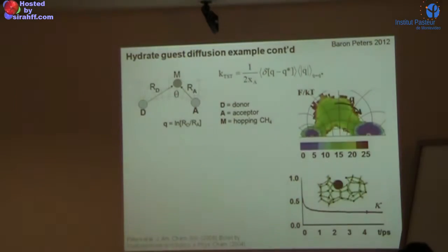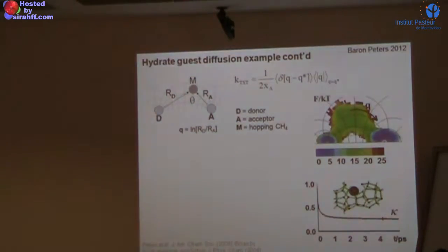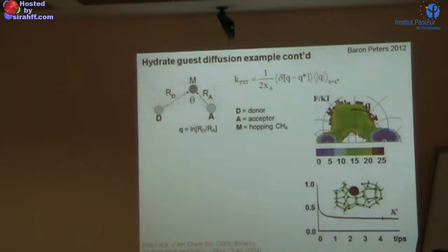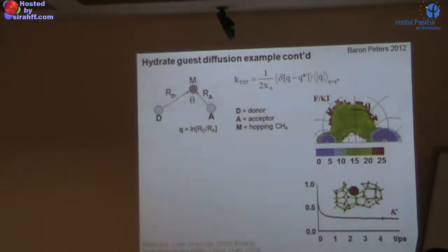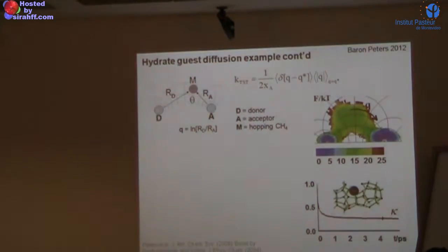We talked about the hydrate gas molecule diffusion example, looking at the rate at which methane can hop between donor cages and acceptor cages in the hydrate structure. We discussed how to choose coordinates and talked about things you can tell when umbrella sampling is being done with the wrong coordinate — your windows start to not match up. When we used the wrong coordinate, we had to go to spherical bipolars, and then everything works out well. The correct coordinate perfectly meshes with the shape of the underlying free energy surface.